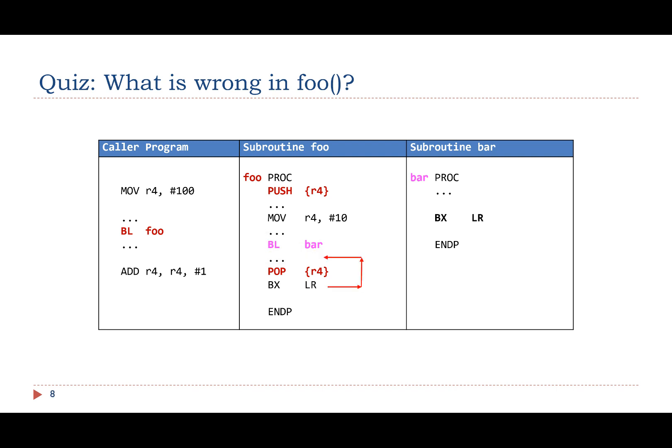Here is the problem. The foo subroutine modifies the link register when it calls bar. However, the foo subroutine did not preserve the link register. Therefore, when it executes BX LR, it generates a dead loop because the link register points to the instruction immediately after the instruction BL bar. As a result, the foo function cannot return the control back to the caller.